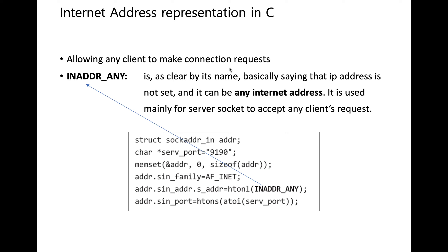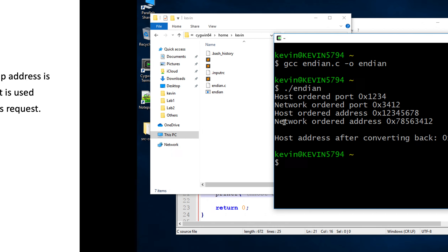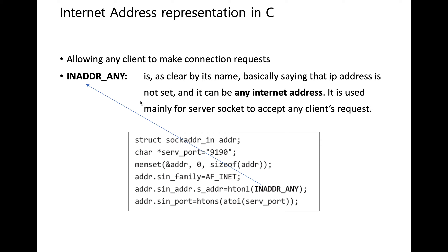Now let's look at how to actually pass an IP address to a socket. There is a flag called INADDR_ANY — when creating a TCP server, you can use this flag instead of specifying an IP address. This tells the server to listen on any IP address. Since the server doesn't know which clients will connect, it uses INADDR_ANY when binding, so any device that wants to connect can reach it.